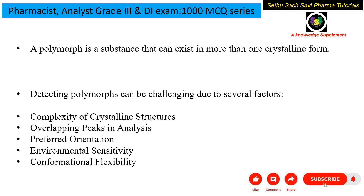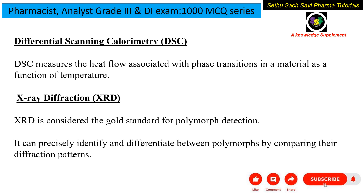The ideal analytical tools for polymorph analysis are DSC (differential scanning calorimetry), which provides a DSC thermogram to analyze different polymorphs, and XRD (X-ray diffraction), which is the gold standard for polymorph identification — different polymorphs produce different diffraction patterns.